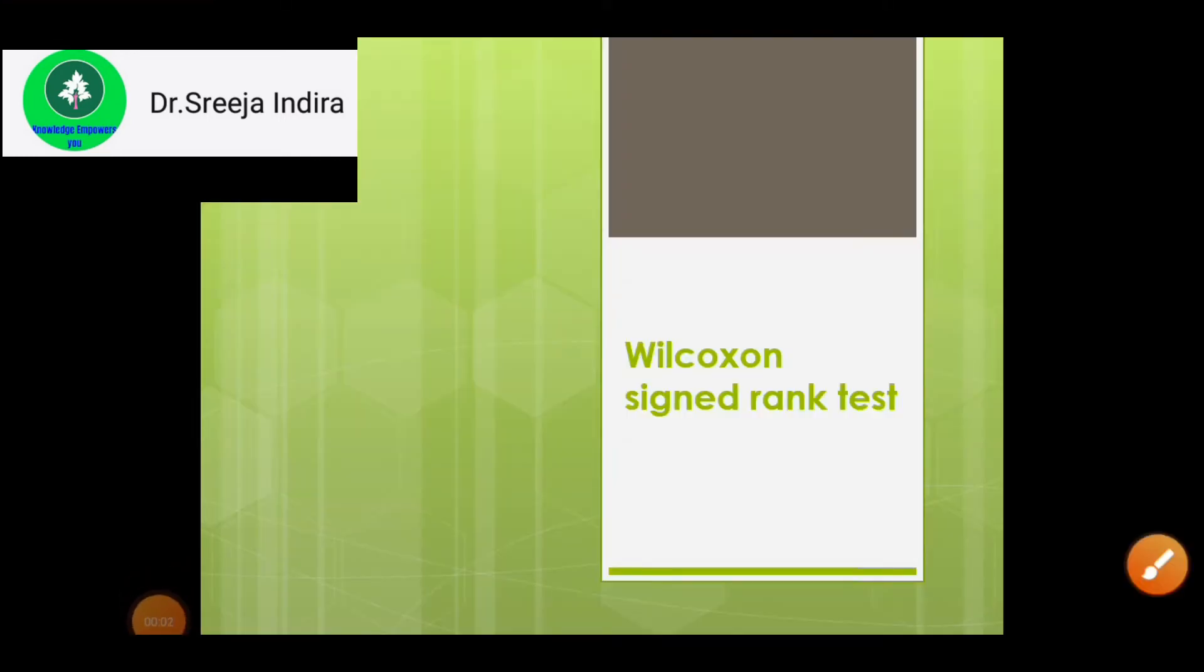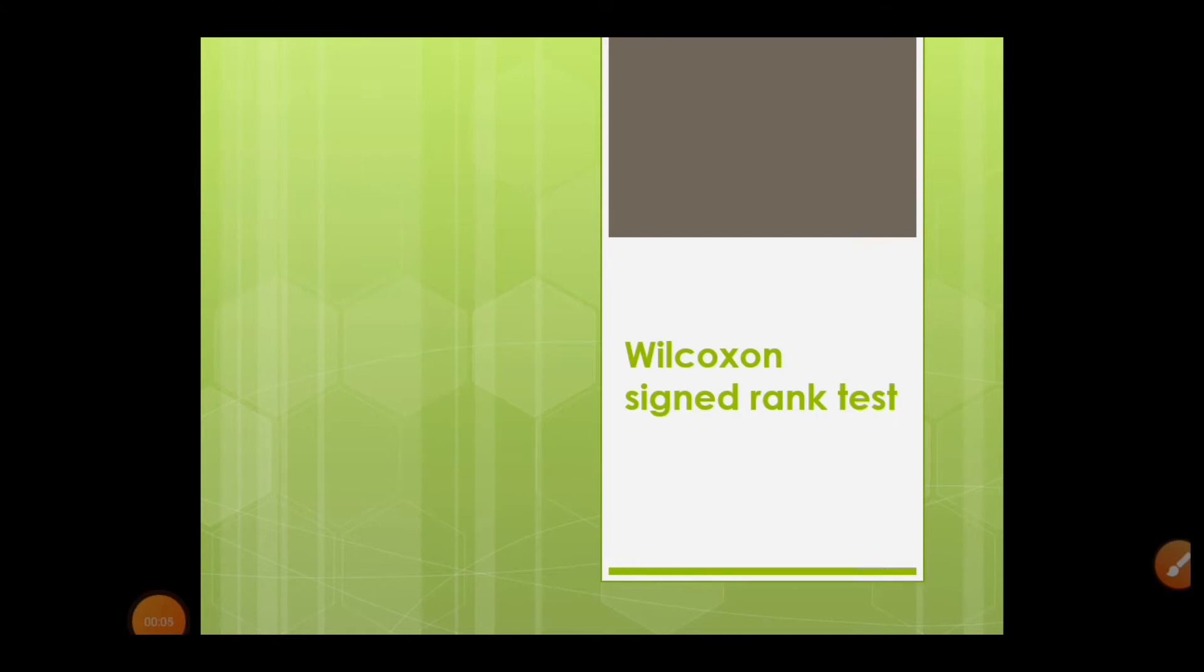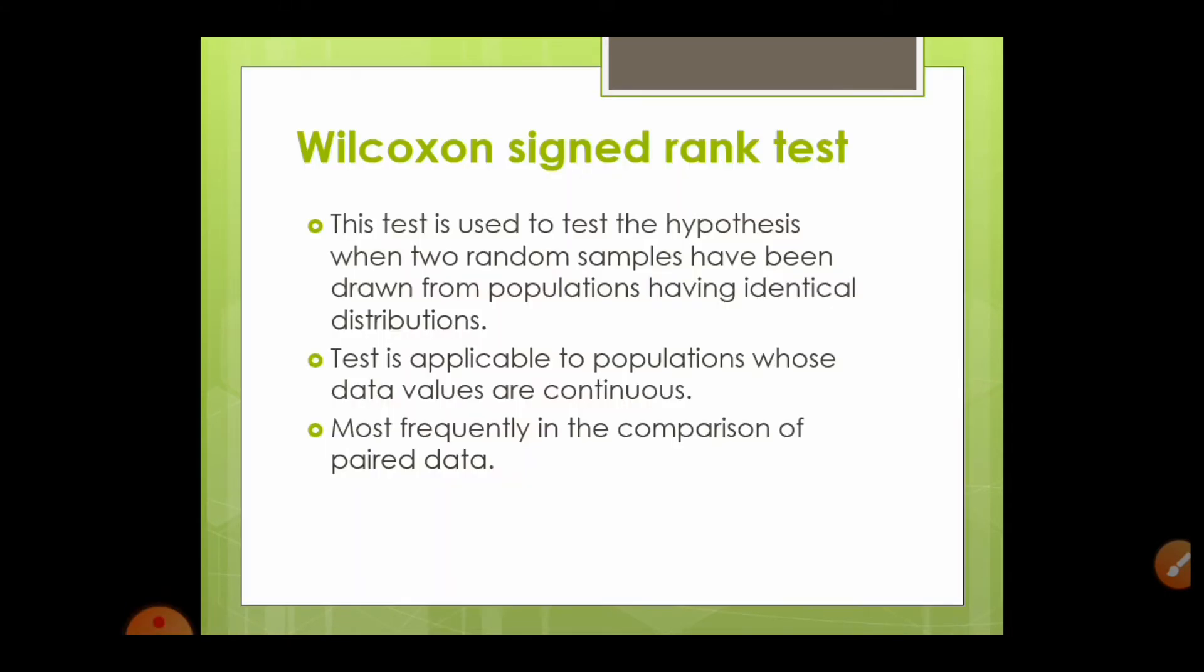Dear students, today we are going to discuss the Wilcoxon signed rank test. The Wilcoxon signed rank test is a non-parametric test. This test is used to test the hypothesis when two random samples have been drawn from populations having identical distributions.